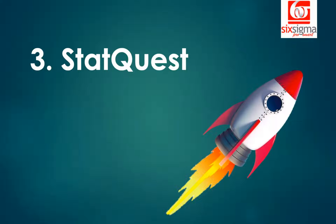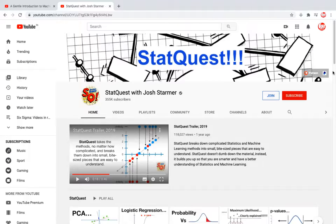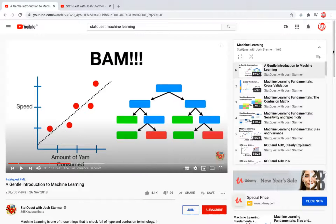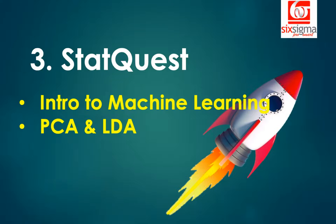Now we come to the third channel. After our first two recommendations, you're now beginning to get into advanced topics, and the channel that really helps is StatQuest. Your instructor is Josh Starmer from the Genetics Department of the University of North Carolina, Chapel Hill. You will find Josh sings and plays guitar while teaching stats — how cool is that? He simplifies the most complex concepts in an easy-to-follow way with great real-life examples and covers all the jargon to give you proper clarity. The playlist to follow is titled A Gentle Introduction to Machine Learning. His videos on principal component analysis and linear discriminant analysis are absolute delights to watch and can save you from hours of reading and boring lectures.